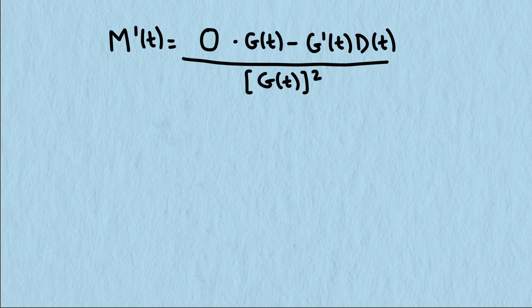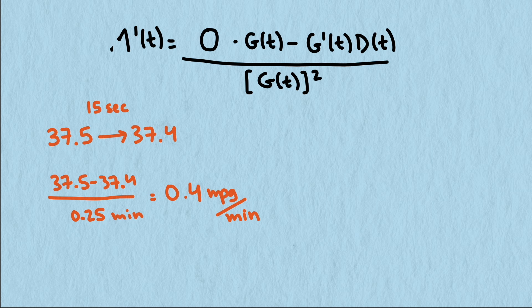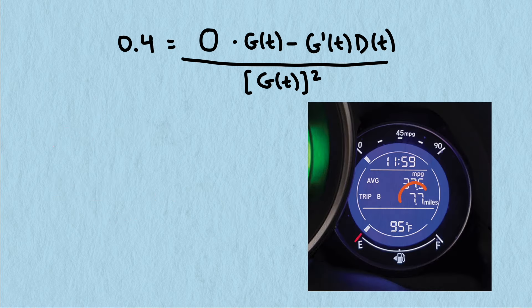I had timed my gas mileage dropping from 37.5 miles to the gallon to 37.4 miles to the gallon in 15 seconds while I was at the stoplight. This allows me to estimate m prime, negative 0.4 miles per gallon per minute. My trip odometer at the time showed that I had traveled 7.7 miles, so d is 7.7.